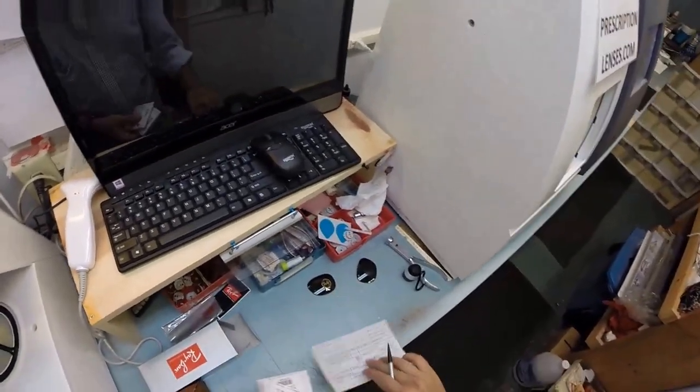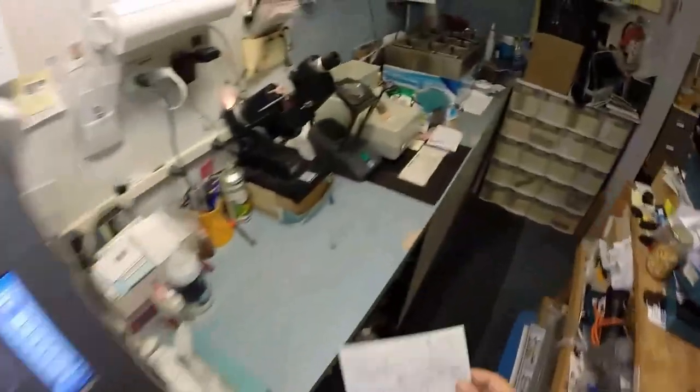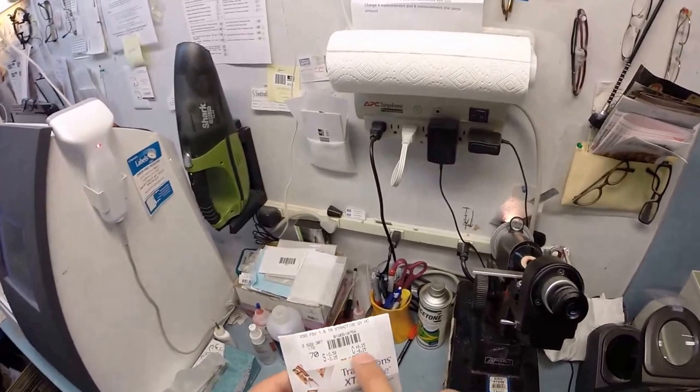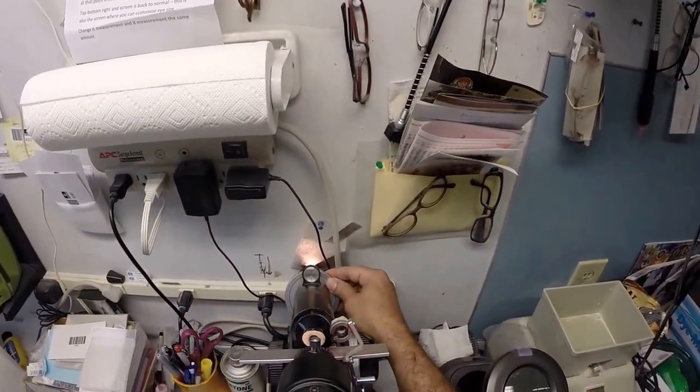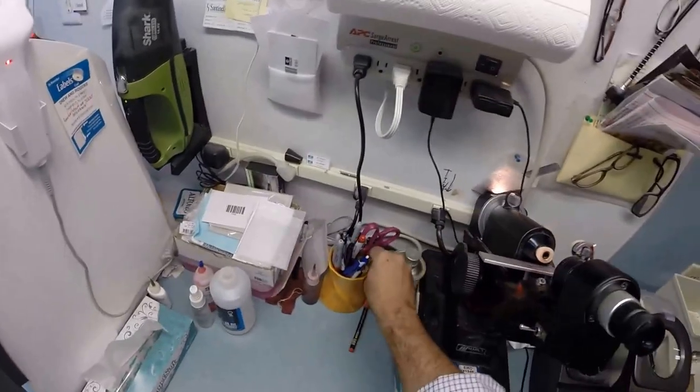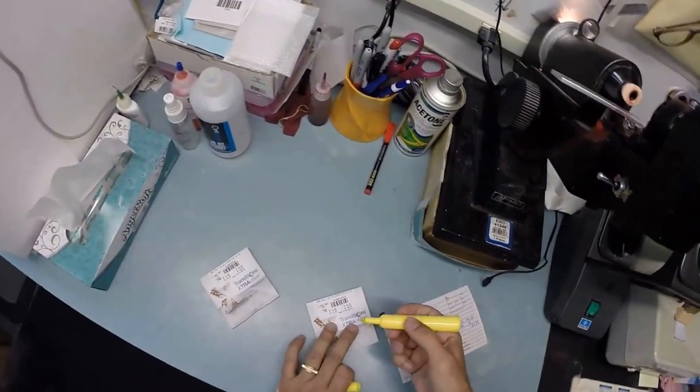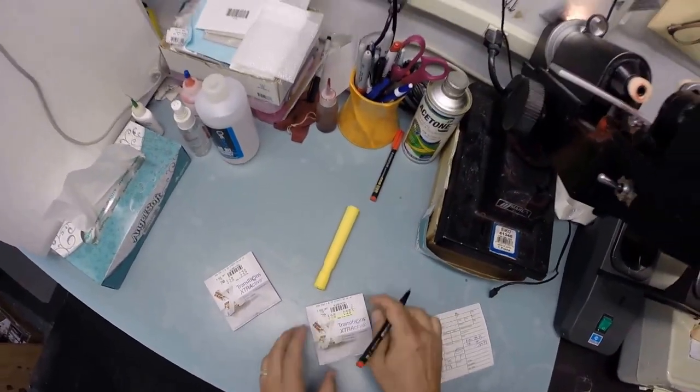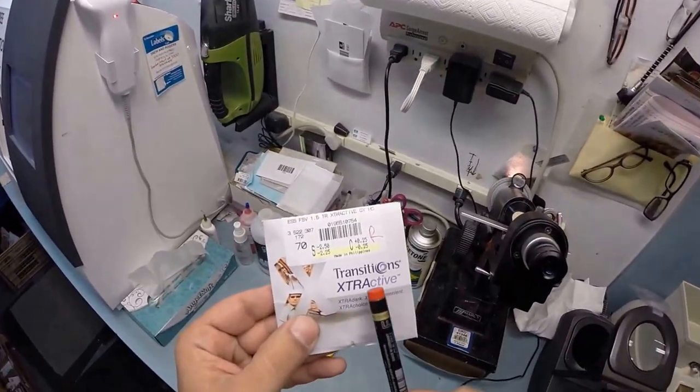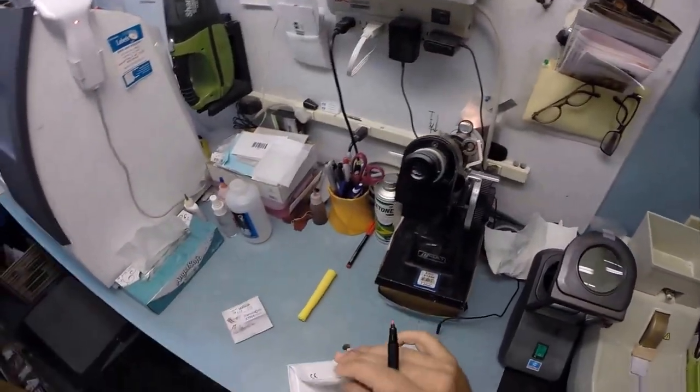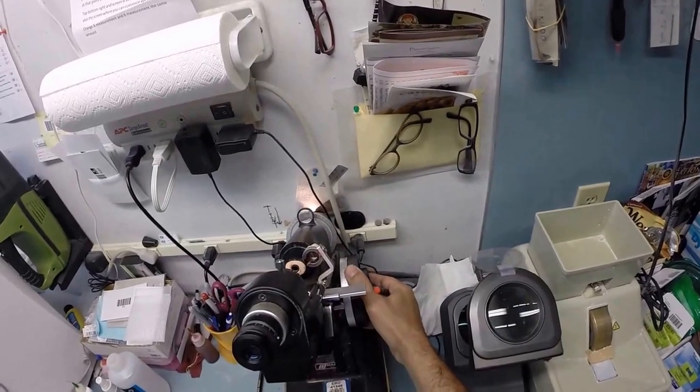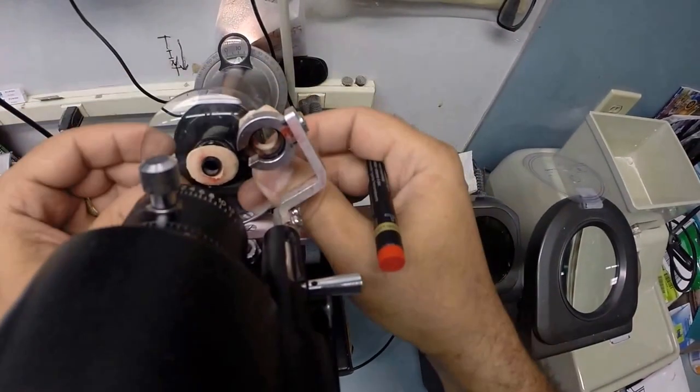Your right eye reads minus 2.25, minus 0.25 at 10. I'm gonna put the axis wheel of my Marco 101 lensometer to 10 and let me get my stylus out. This is going to be your right lens. You're going to receive all the manufacturers original packaging - that is the right - so you know you are receiving Essilor brand transitions extra active. I'm gonna take the lens out of the protective packet, put the power drum on minus 2.25.